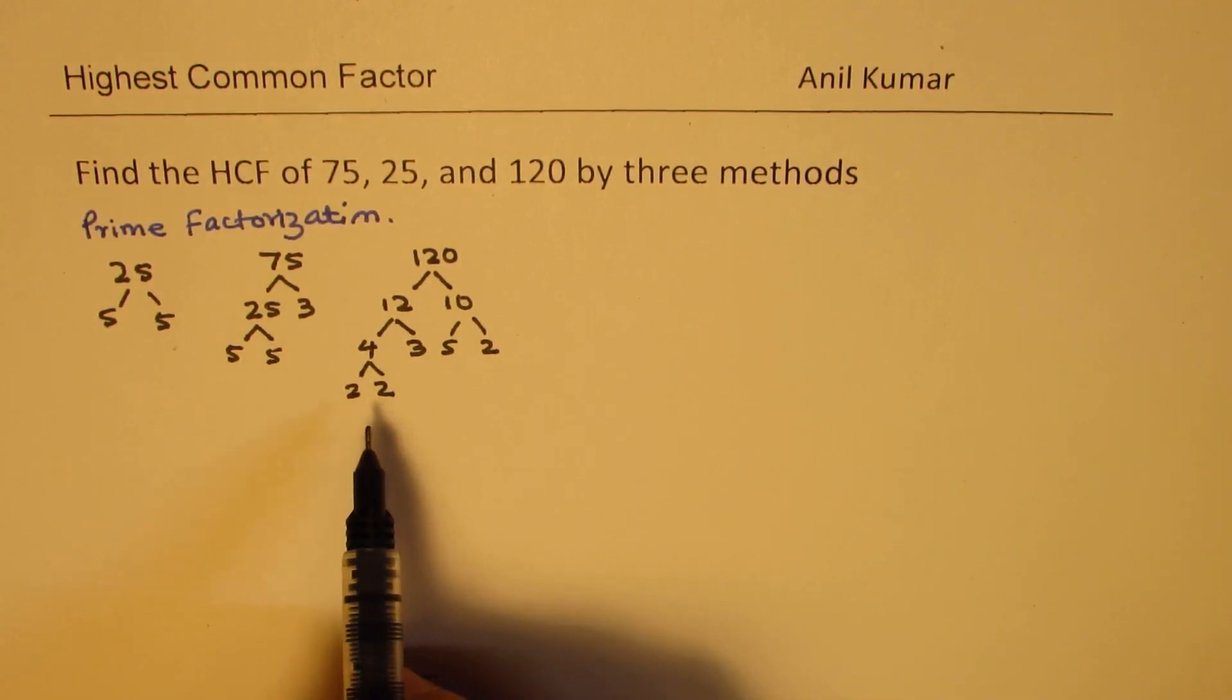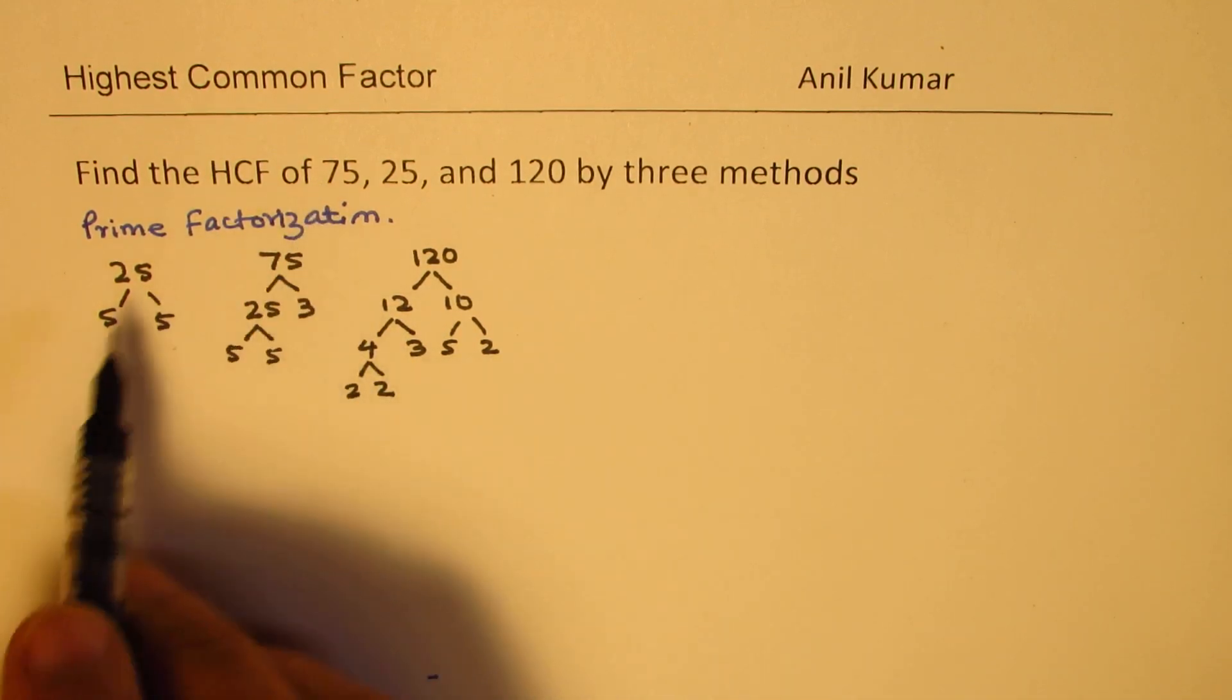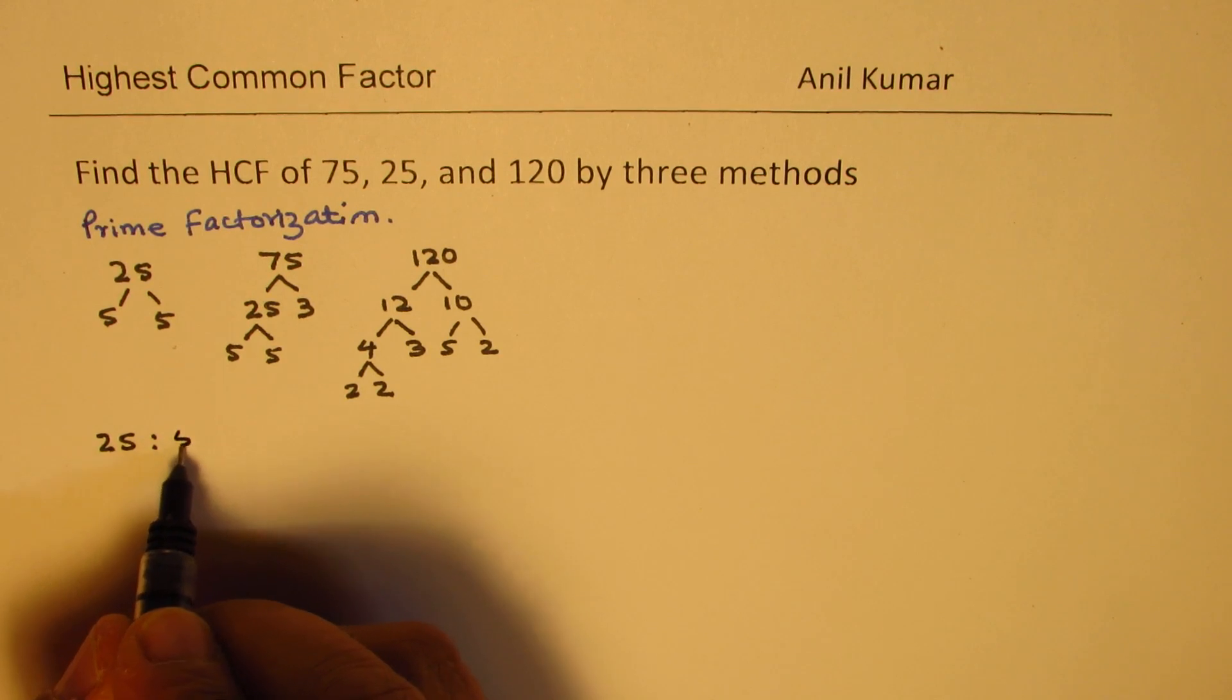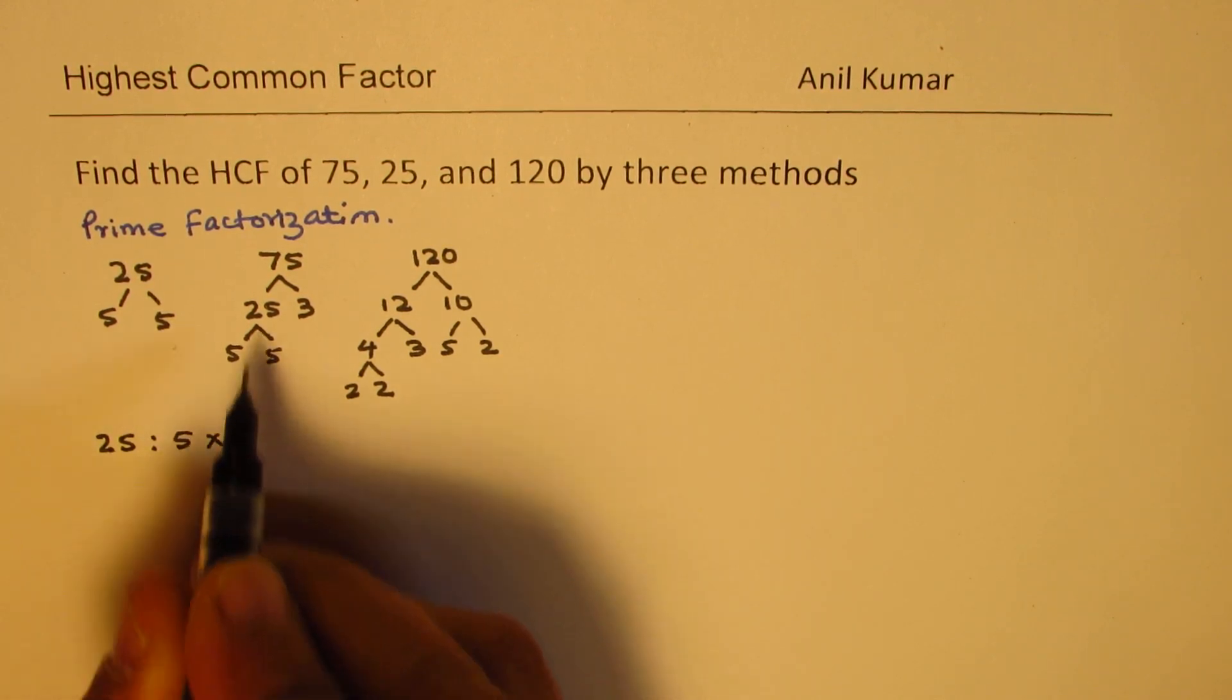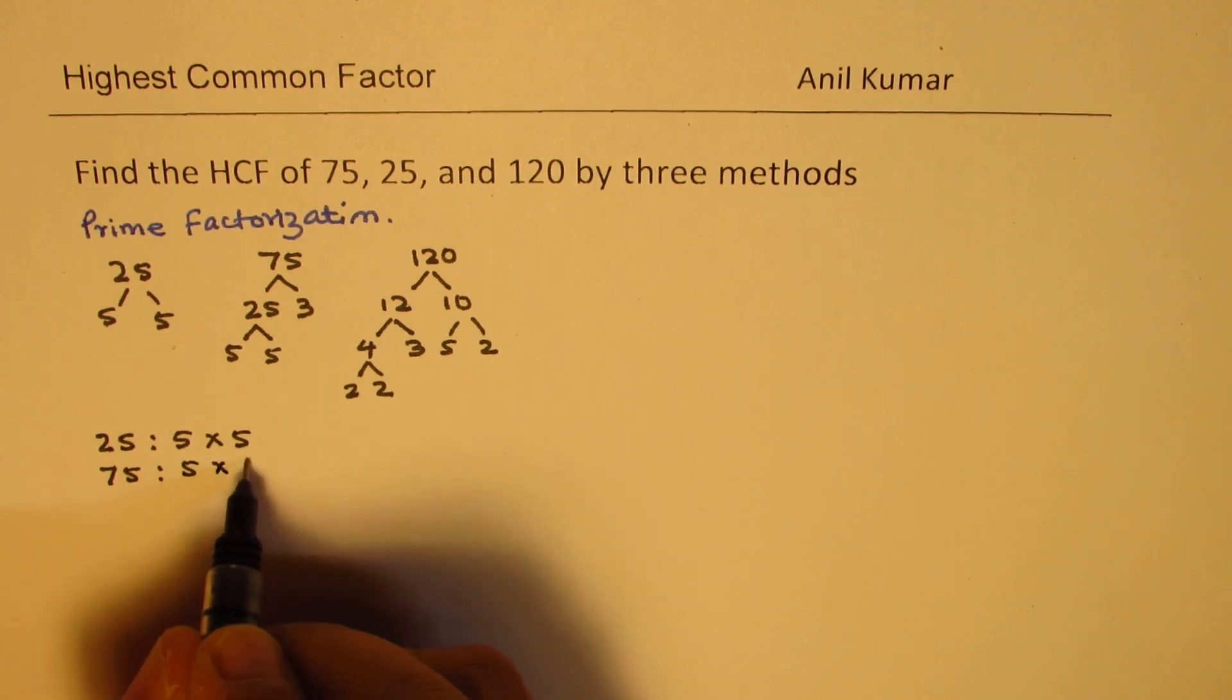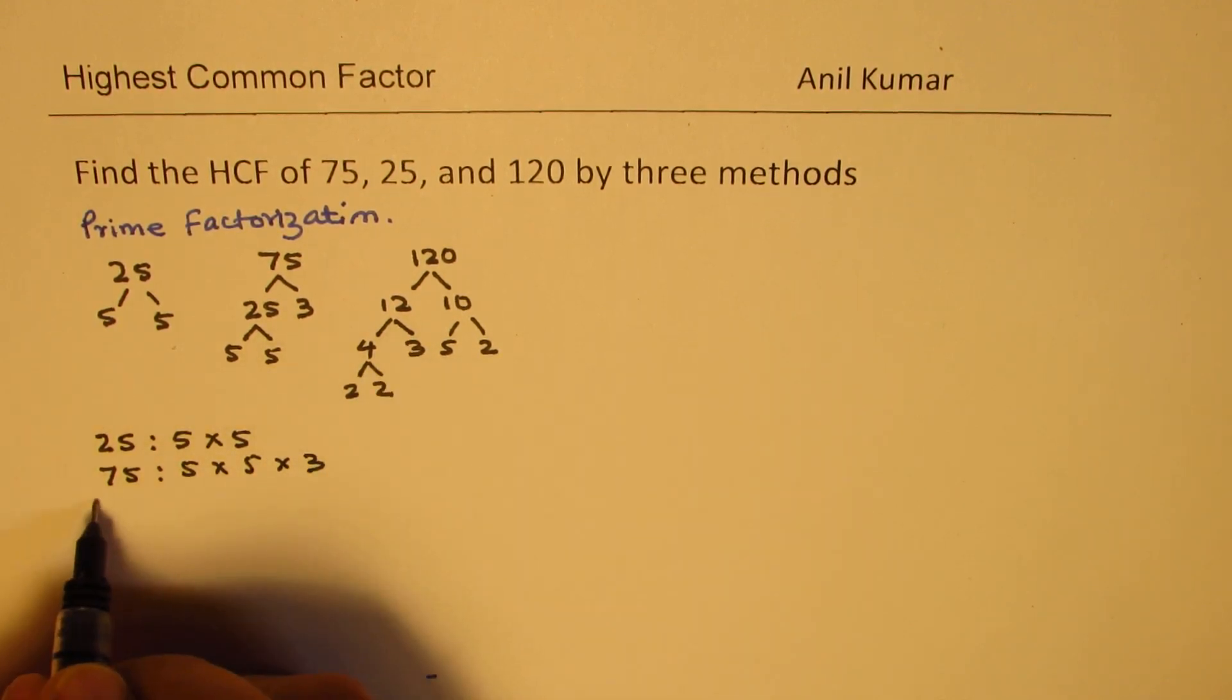Now, from here, we can write down that the prime factors for 25 are 5 times 5. For 75, we have 5 times 5 times 3.